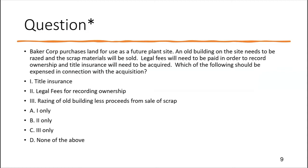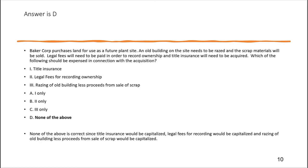Baker Corp purchases land for use as a future plant site. An old building on the site needs to be razed and the scrap materials will be sold. Legal fees will need to be paid to record ownership and title insurance will need to be acquired. Which of the following should be expensed in connection with the acquisition? Title insurance — usually an expense in accounting, but not when you buy property; it's capitalized as part of land cost. Legal fees for recording ownership — capitalized to land cost. Razing the old building less proceeds from sale of scrap — capitalized to land. None of these would be expensed, so the answer is D.